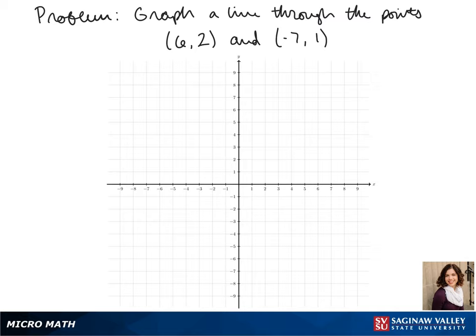Welcome to another day of algebra. Today we're graphing a line through the points 6, 2 and negative 7, 1.